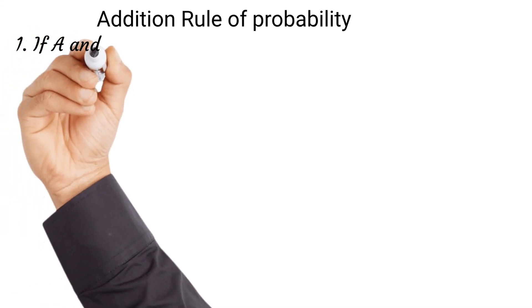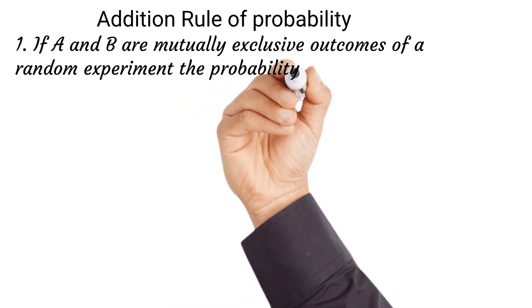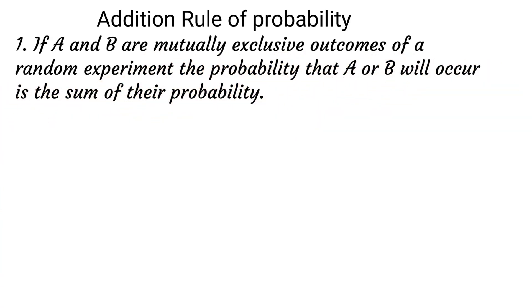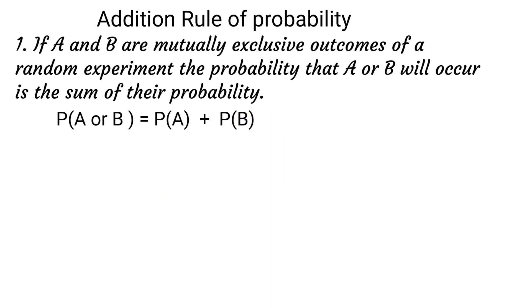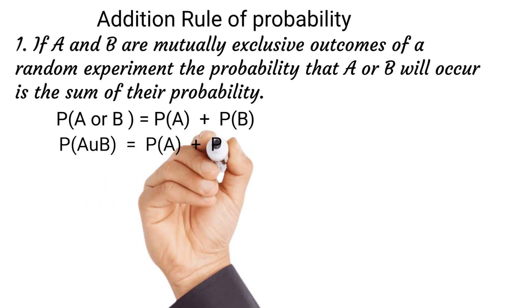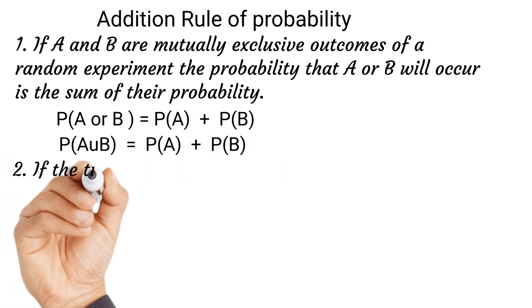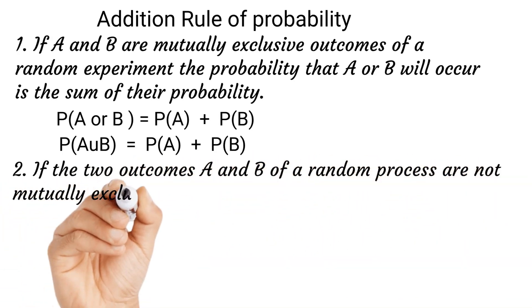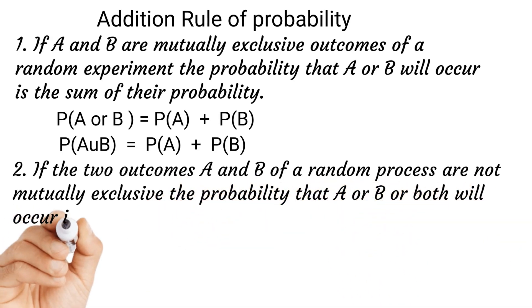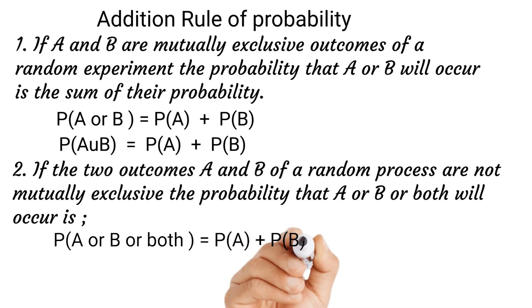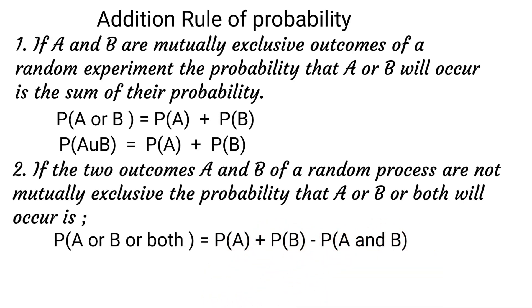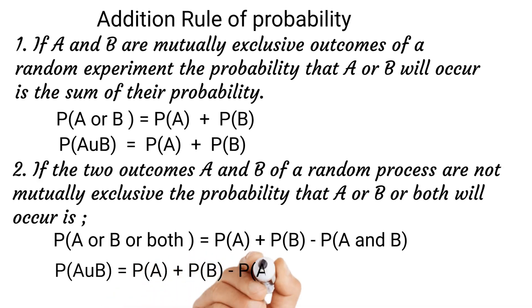Addition rule of probability: if A and B are mutually exclusive outcomes of a random experiment, the probability that A or B will occur is the sum of their probabilities. The probability of A or B equals the probability of A plus the probability of B, which we abbreviate as P(A ∪ B) = P(A) + P(B) − P(A ∩ B). We can use this to solve problems.